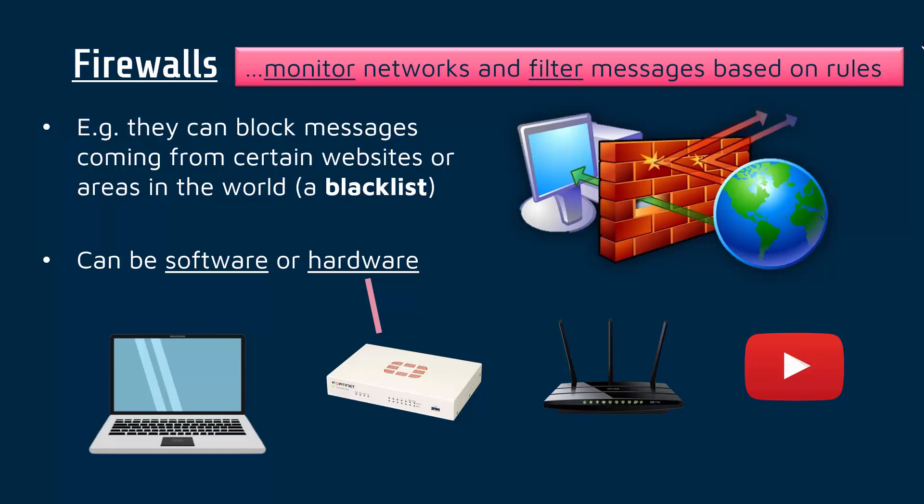Let's assume YouTube is allowed — your school IT staff might have blocked YouTube in their firewall, but let's say it's allowed. It comes from the internet via the router first, then gets passed to the firewall, which will decide if it is allowed in or not. It looks up the blacklist — is YouTube on it? No, so it allows it into the network. This takes only a fraction of a second to decide.